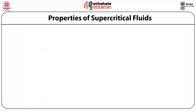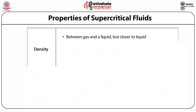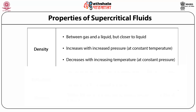Supercritical fluids are highly compressed gases that have both liquid-like and gas-like characteristics, making them unique for chemical separation. The first property is density. The density of a supercritical fluid is between that of a gas and a liquid, but closer to liquid. In the supercritical region, density increases with increased pressure at constant temperature, and when pressure is constant, density decreases with increase in temperature. The dissolving effect of a supercritical fluid is dependent on density, making it an essential parameter.